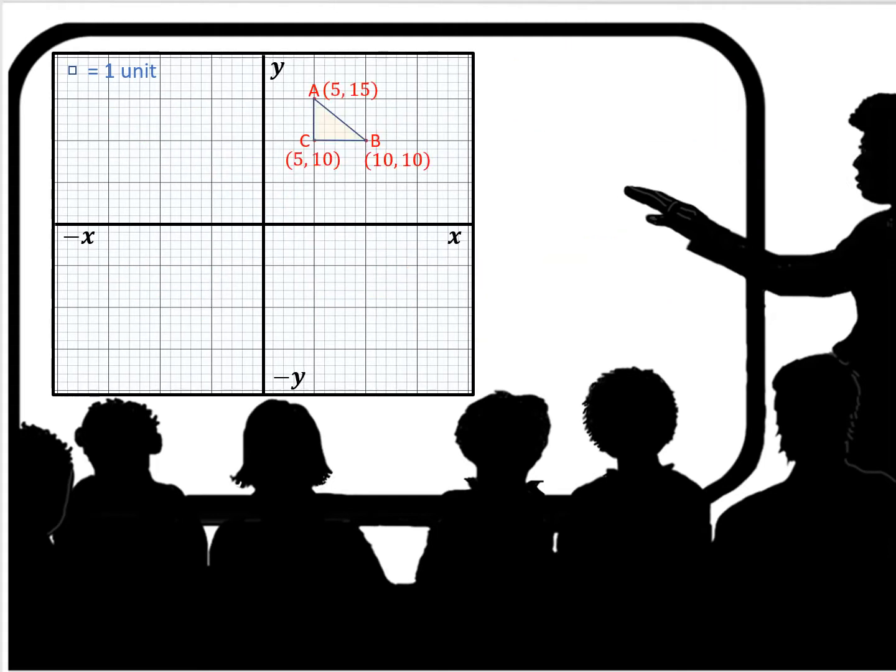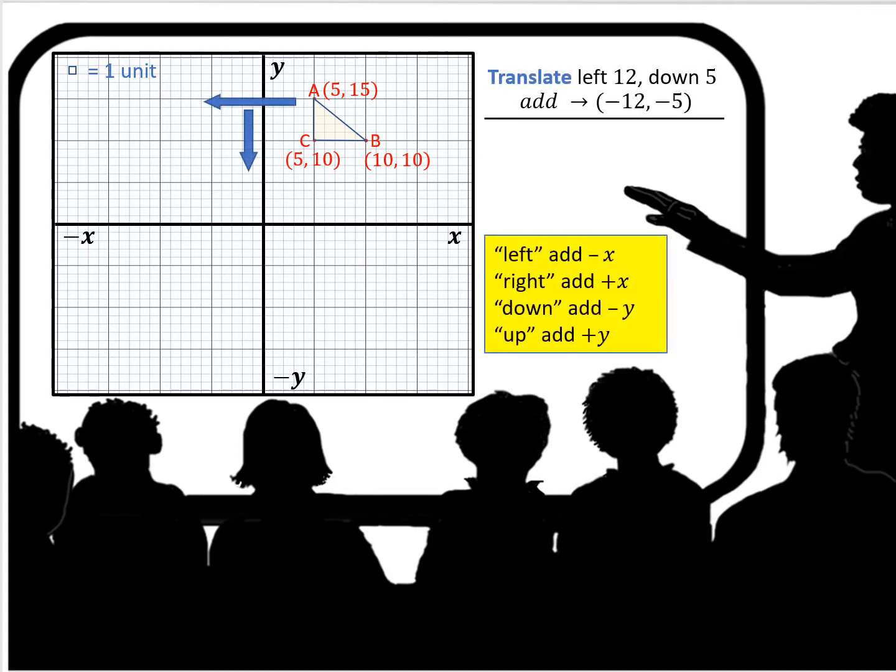So here we have a triangle in Quadrant 1 and its coordinates as you see. We need to translate it left 12 and down 5. When you see left or down, that's going to be negative. So left is add negative x, down is add negative y. If you're going to the right and up, you would add a positive x or you would add a positive y.